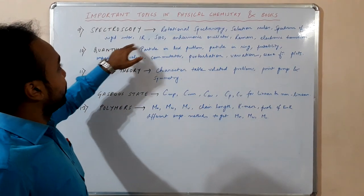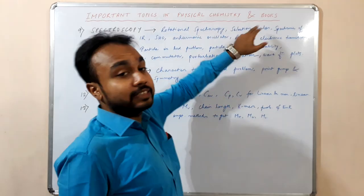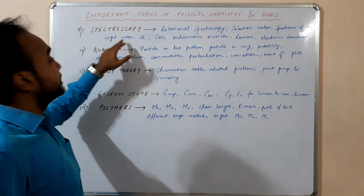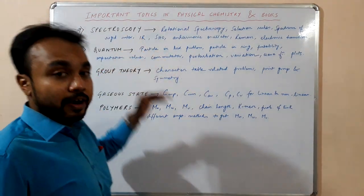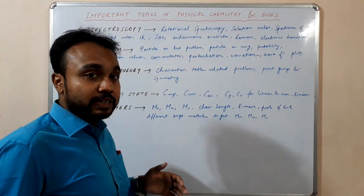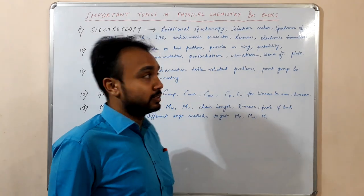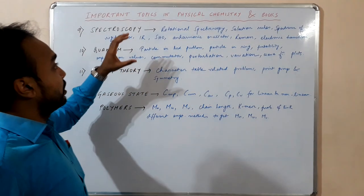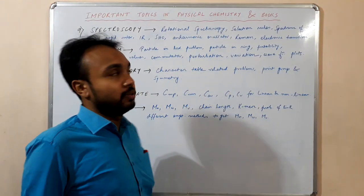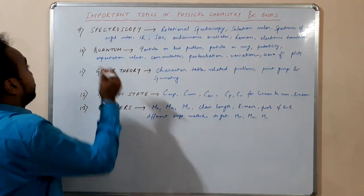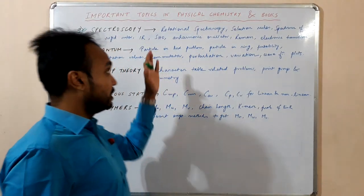Next is spectroscopy. We will mainly focus on rotational spectroscopy and the selection rules. Then the spectrum of rigid rotor as well as non-rigid rotor. Then we will move to IR spectroscopy — simple harmonic oscillator and anharmonic oscillator. Then Raman spectroscopy and electronic transitions. We will cover theory concepts as well as some numericals based on these topics. Spectroscopy is very important for NET and GATE exams.